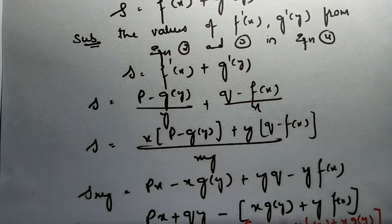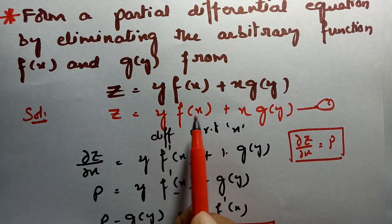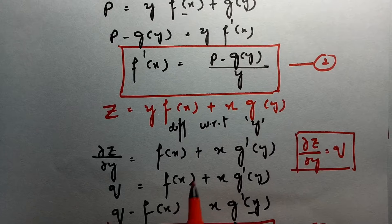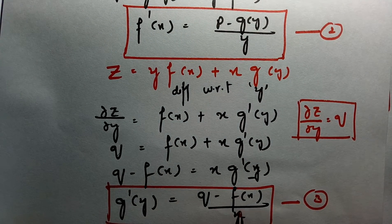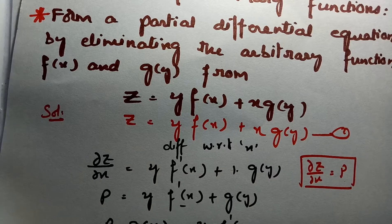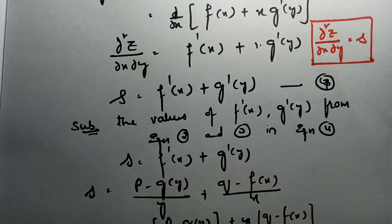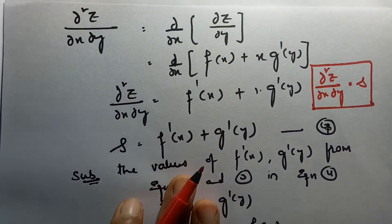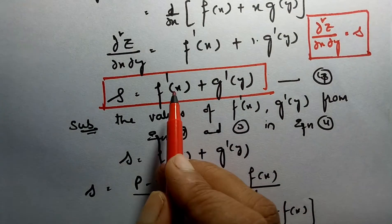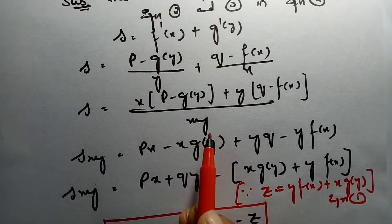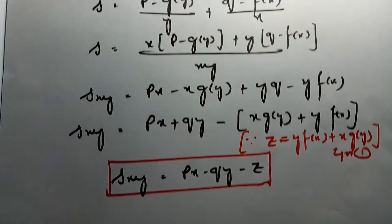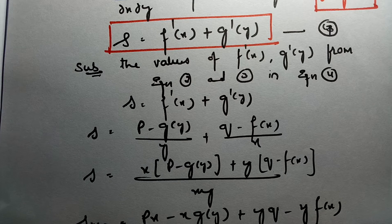If you see once, it is so simple. The question is z = y·f(x) + x·g(y). We differentiate with respect to x and get f'(x), then differentiate with respect to y to get g'(y). We have two functions to eliminate and two equations are not sufficient, so we form ∂²z/∂x∂y = s = f'(x) + g'(y), then substitute to get sxy = px + qy − z.